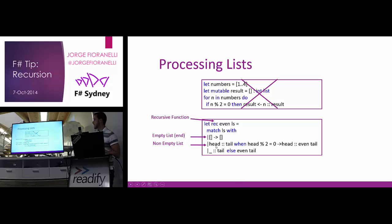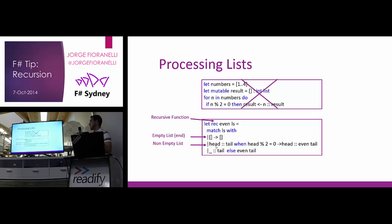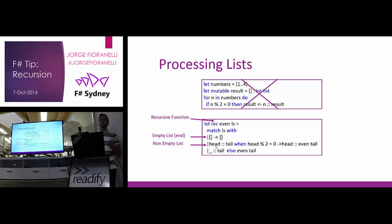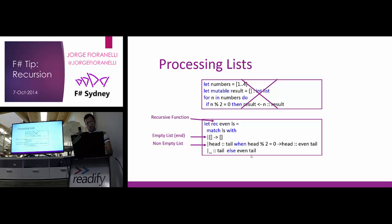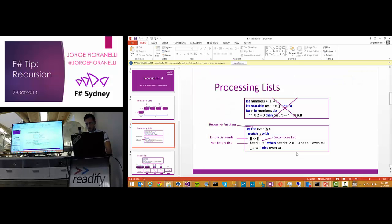The third case also checks for a head and a tail, but we don't care about the head — so we use an underscore, and the compiler won't keep that value. The only thing we care about is the tail. This last case handles when the head is not even: we call the same function again but this time using just the tail, skipping the head.